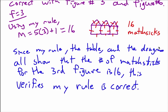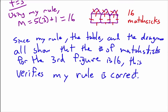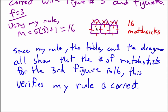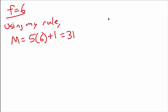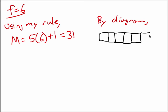We can do the same process for figure number six. For F equals six, using my rule, you get M equals five times six plus one, which equals thirty-one. We didn't draw the sixth diagram yet, so we're going to do that next. This is going to be the sixth figure, so I'm going to need six matchstick houses.